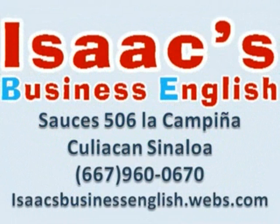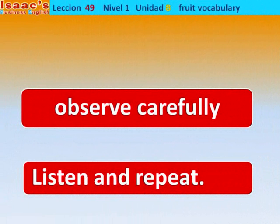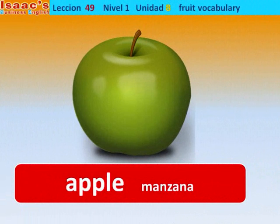Isaac's Business English, Lección 49, Nivel 1, Unidad 8: Fruit Vocabulary. Observe carefully, listen and repeat. Vamos a practicar vocabulario de frutas. Hago la aclaración que los nombres en español es como se dicen en México. Ready.